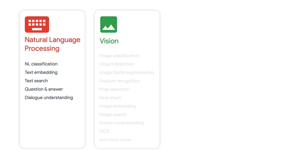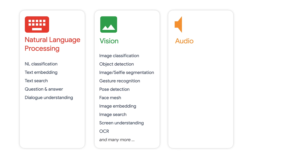We can separate appropriate ML tasks into four categories: natural language processing, vision, audio, and finally other for more one-off tasks. As you can see here, we're either already supporting or plan to support a wide variety of tasks with MediaPipe.